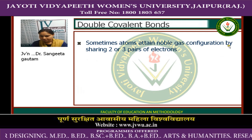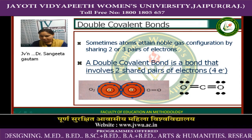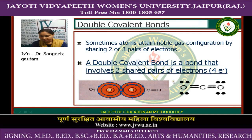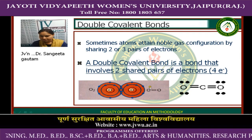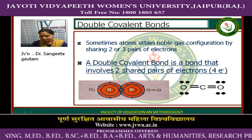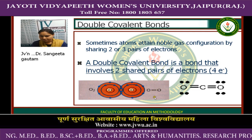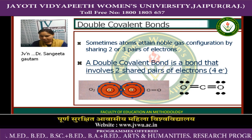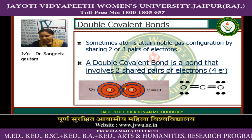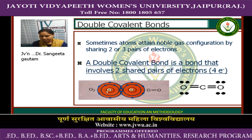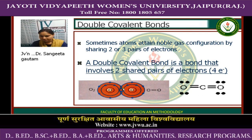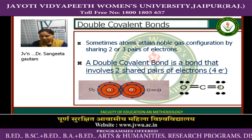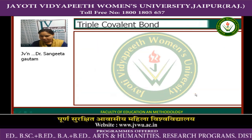Sometimes atoms attain noble gas configuration by sharing two or three pairs of electrons. A double covalent bond is a bond that involves two shared pairs of electrons, meaning a total of four electrons. The example of a double bond is O₂, where one oxygen atom is bonded to another by a double bond, with four electrons shared between the two atoms — two from each atom. You can also see this double bond in CO₂, where carbon and oxygen each share two electrons to form a double bond.